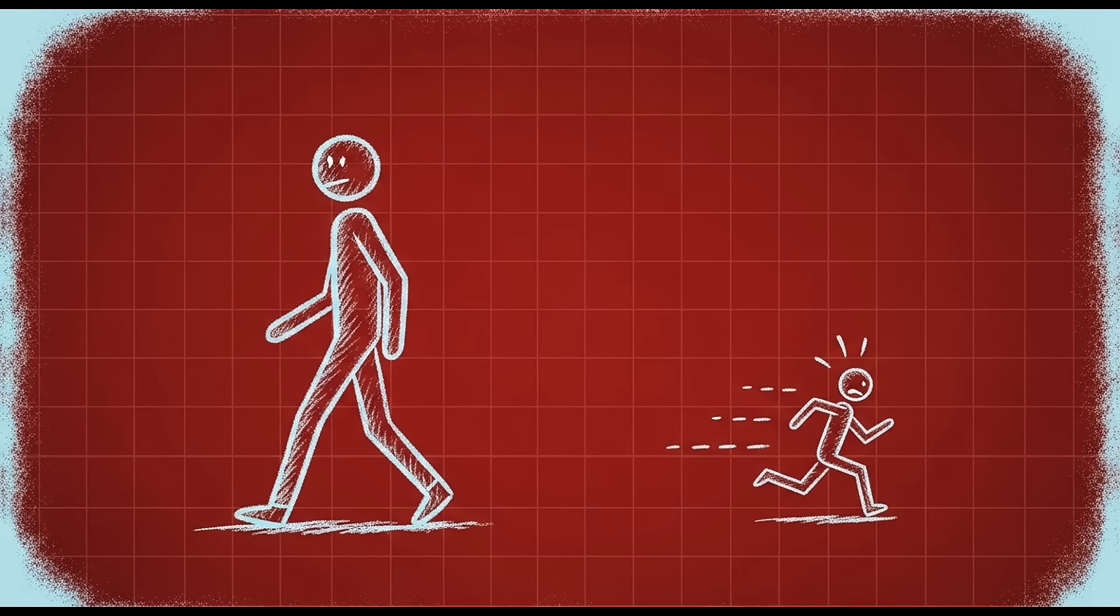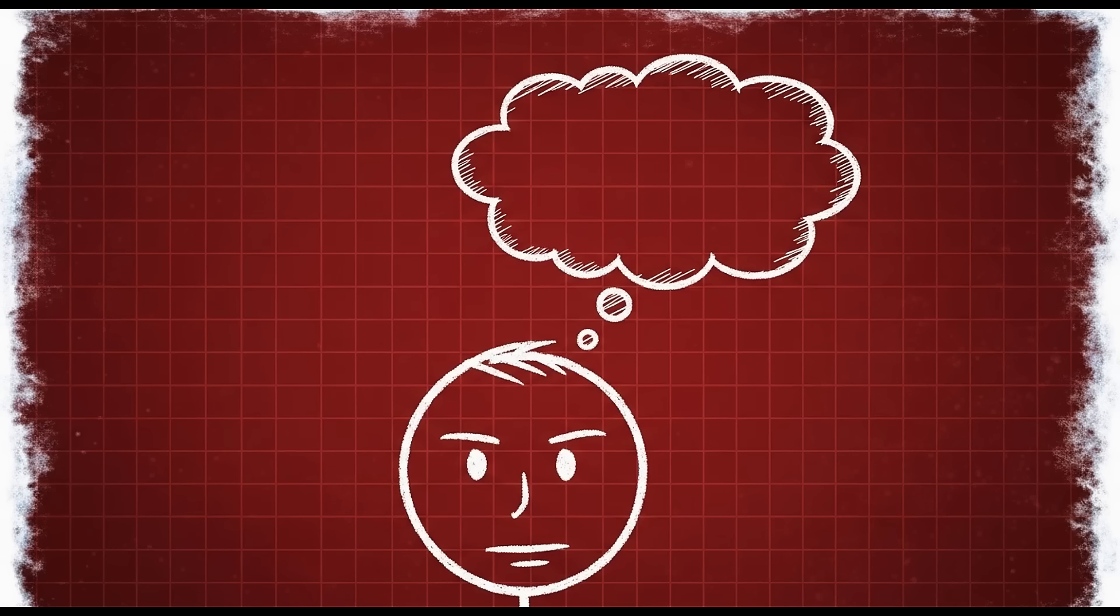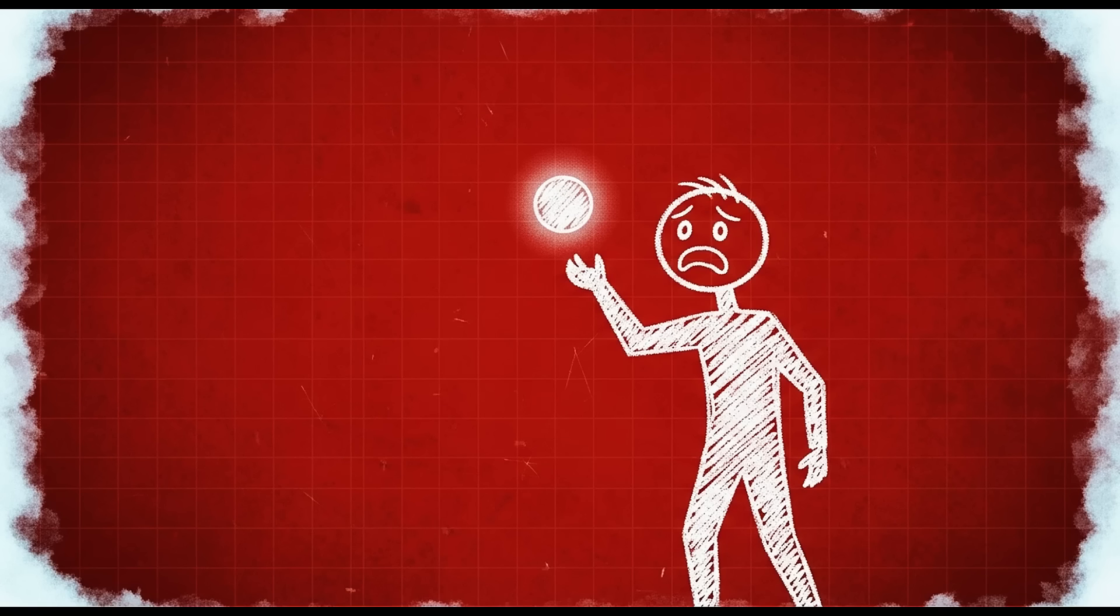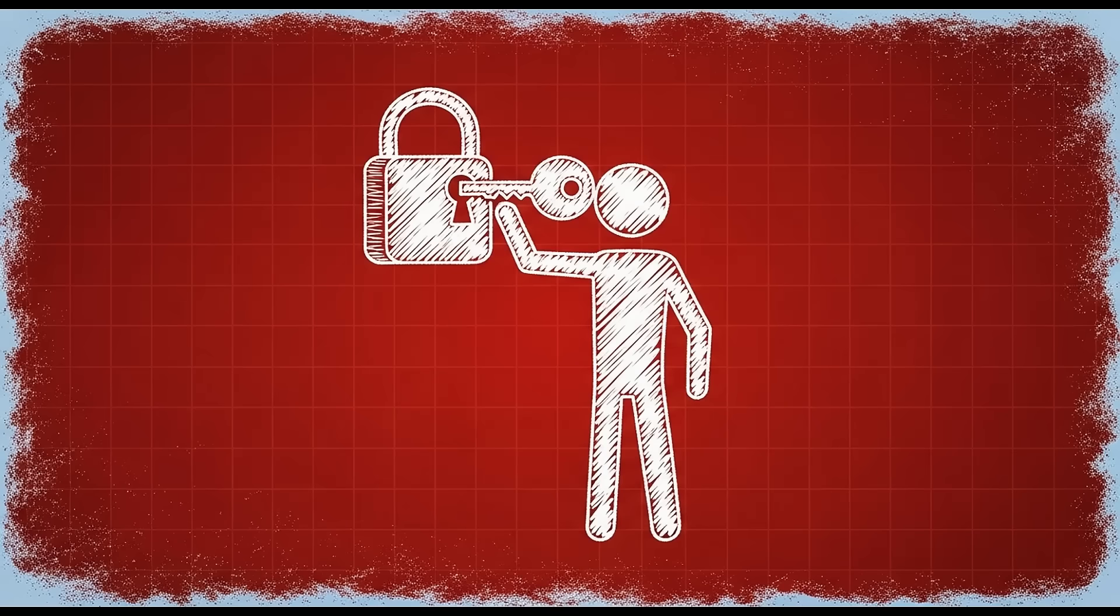There's a tiny cluster of neurons called the nucleus accumbens. Think of it as your brain's motivation engine. It runs on a neurotransmitter called dopamine. But dopamine doesn't work the way most people think. It's not the pleasure chemical, it's the wanting chemical. Dopamine spikes when you anticipate a reward, not when you receive it.